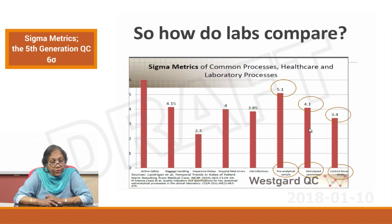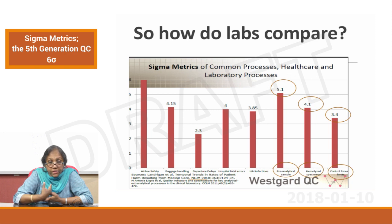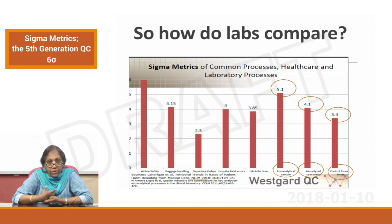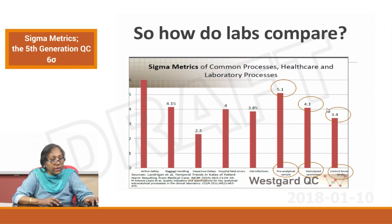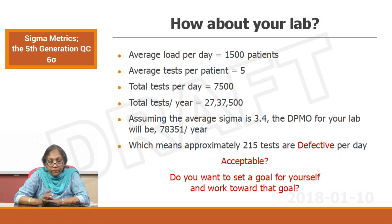Hemolyzed specimens are 4.1 sigma, and controls exceeding limits — within our laboratories we have only attained up to 3.4 sigma. That is a lot of errors, and we are talking about some really good standardized labs at this point. In our case we are just beginning to make these efforts into quality control, so we really have to set our goals and work towards them. We are taking the 3.4 figure from the previous slide — controls exceeding limit — now how about your lab?